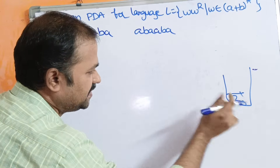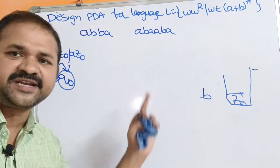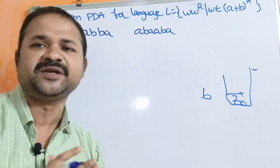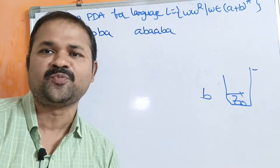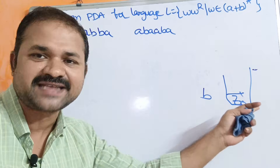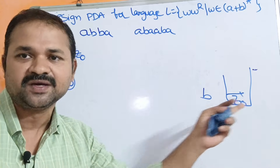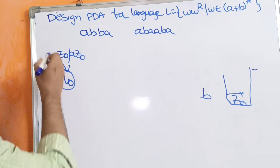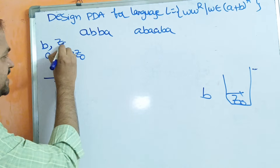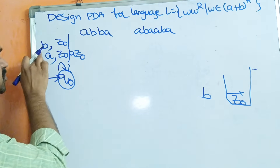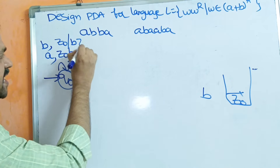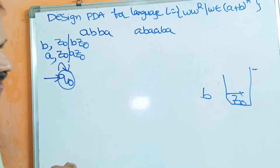Likewise, if the input symbol is B and the stack is empty (top symbol is Z0), there is no problem. We can simply push B onto the stack. The stack is empty, so we can push that symbol. The content of the stack will become BZ0.